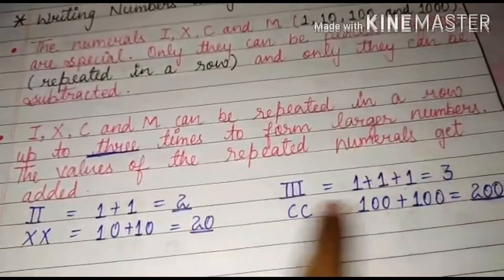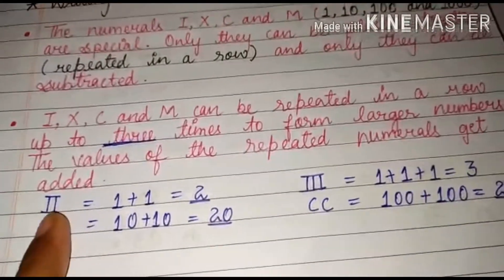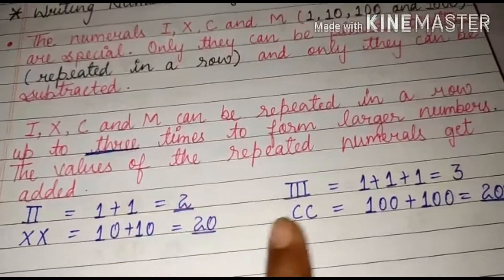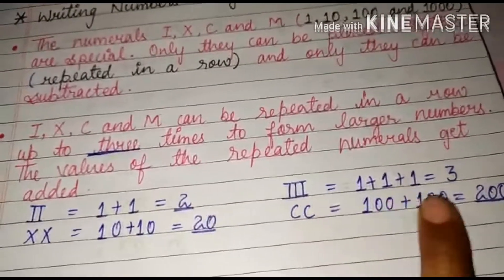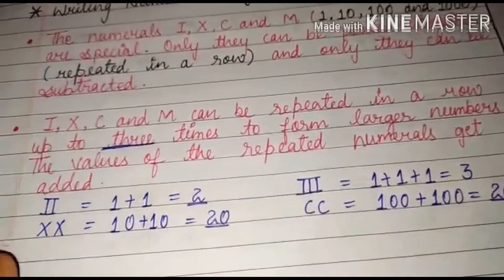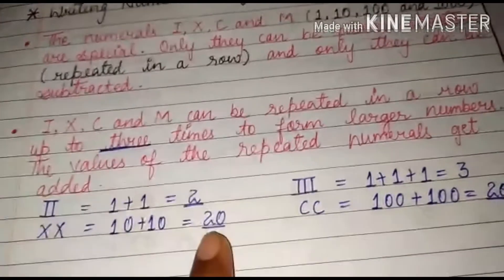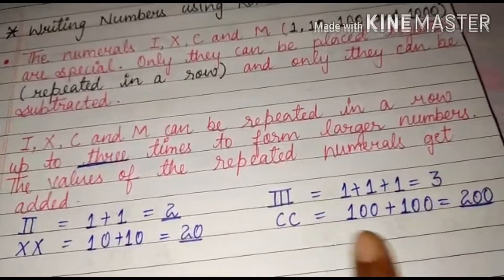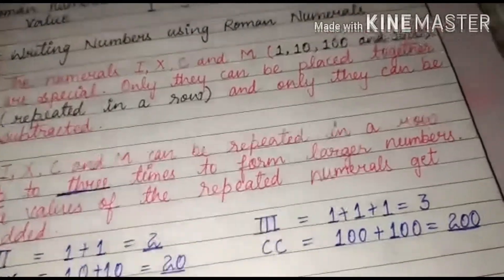Now our second point is I, X, C, and M can be repeated in a row, only these numbers can be repeated and at least up to 3 times. You cannot repeat them for 4 times to form larger numbers. The values of the repeated numerals get added like I, I. I is 1, another I is 1, it's 2. Three times I means 3 times we have to add 1, that is 3. Two X that is 10 plus 10, that is 20. Two C means C is 100, so 100 plus 100 equals 200.